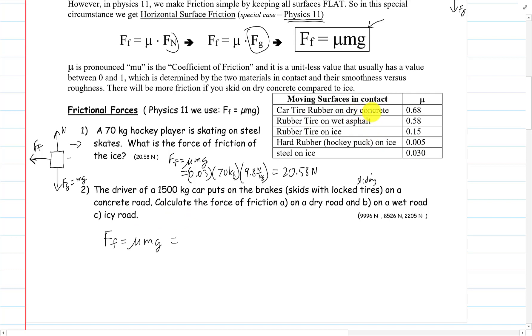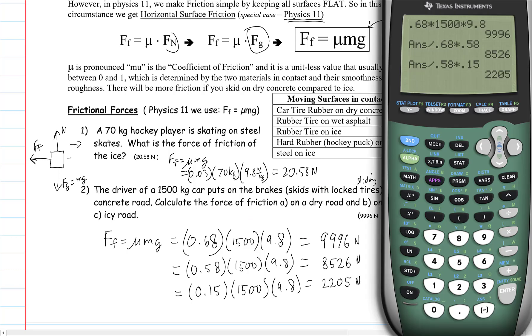Rubber tire on dry concrete 0.68 times the mass 1500 times 9.8. Then we're going to do it again on wet, so mu will be 0.58 times 1500 times 9.8. This is going to equal the icy road on ice, rubber tire on ice 0.15. The force of friction that opposes the motion while you're sliding decreases as it goes from dry road to wet road to icy road, and we know that.